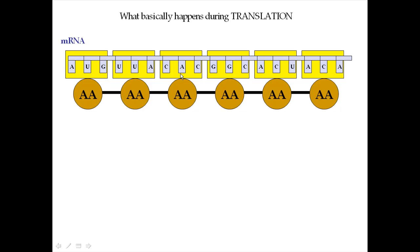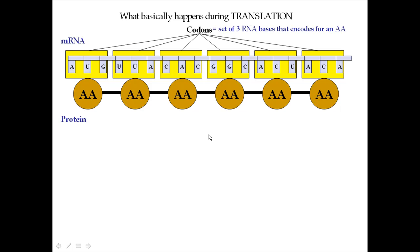These sets of three nucleotides that encode for a particular amino acid are called codons. Codons are found on messenger RNAs, and what they do is encode for a particular type of amino acid. There are three nucleotides found in one codon. That's generally how a cell uses the information on messenger RNA in order to make a protein.